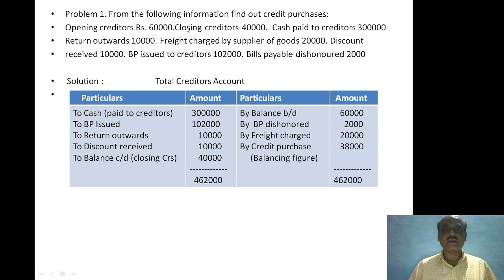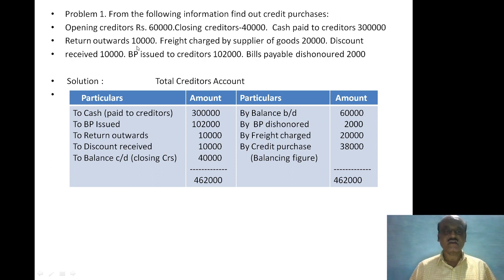To find credit purchases, we open the total creditors account. The opening creditors appear on the credit side, and closing creditors appear on the debit side as the balance carried down. Purchase returns go on the debit side of creditors. Freight charged by the supplier of goods, rupees 20,000, appears on the credit side.